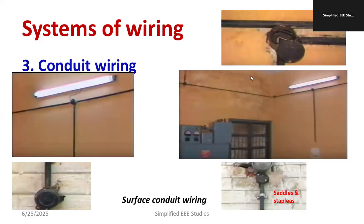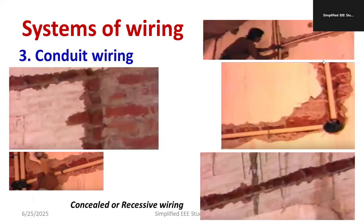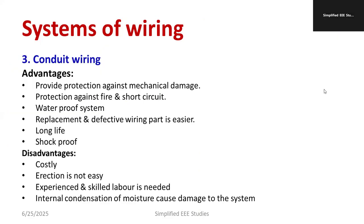The advantages of conduit wiring are protection against mechanical damage, fire, and short circuits; it is a waterproof system; defective parts can be replaced; it provides long life and is shock-proof. The setbacks are that it is expensive, erection is difficult, and once installed, any fault repair is very costly and disrupts the structure. Experienced and skilled labor is required to locate faults. Internal condensation of moisture can also cause damage to the system.